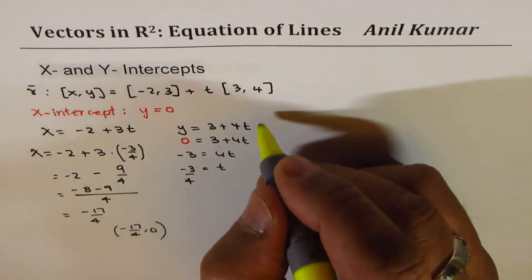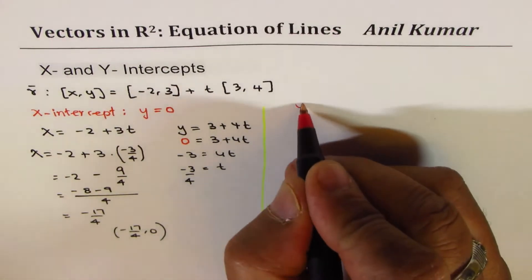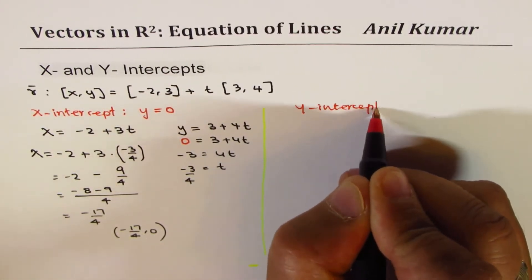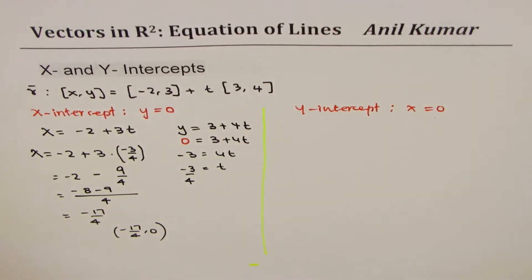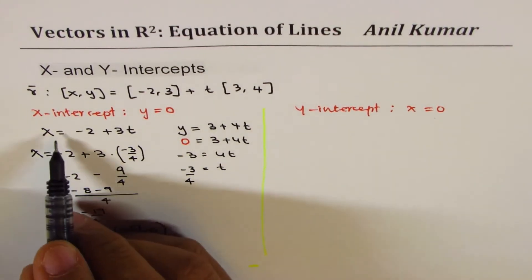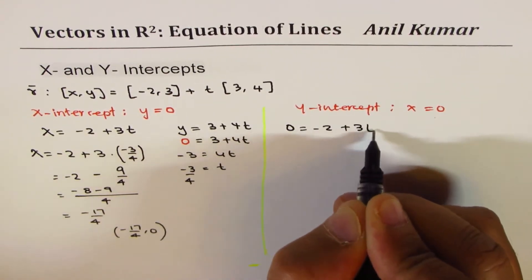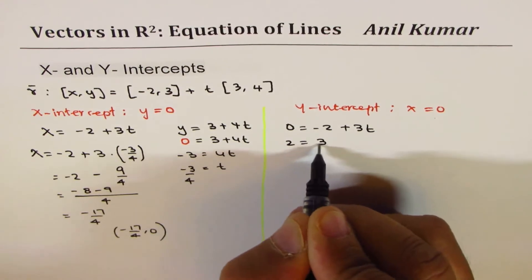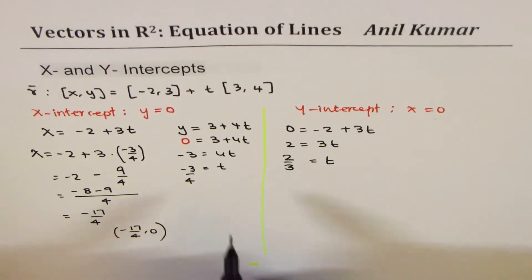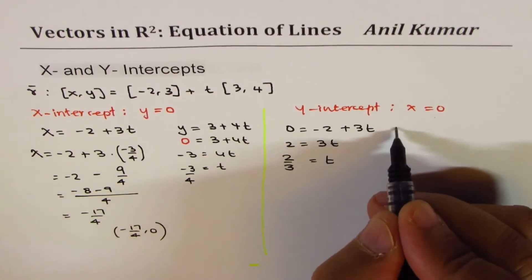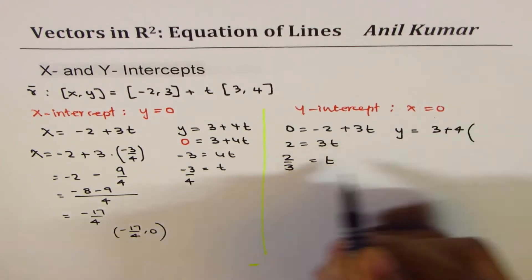Now you could also find the y-intercept. To find the y-intercept, you make x equals to 0. So writing 0 here: 0 equals to minus 2 plus 3t. Rearranging: 2 equals to 3t, so t equals 2 over 3. Once you get this value of t, you can find y. So y equals to 3 plus 4 times 2 over 3.